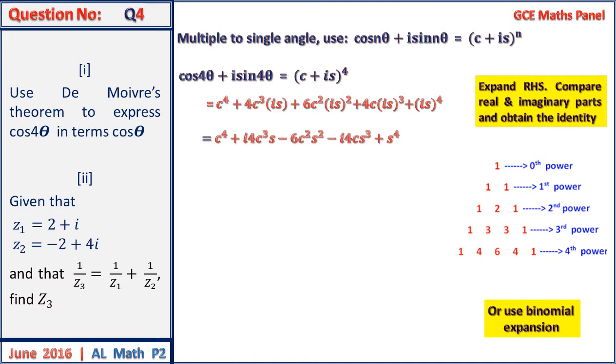Bringing the real parts together we have that, and imaginary parts together we have that. Now using the identity, cos 4θ is actually a real number, so this will give us the real part.